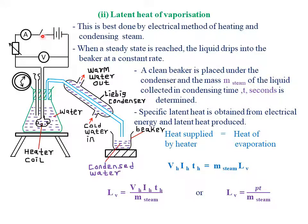In this particular experiment, the first step is simply to close the switch so that the electrical energy flows through this particular heater. Remember that the heater usually has a heating coil, which is made of a material of very high electrical resistance, such that when electrical energy flows through the heating coil, all the electrical energy will be converted to heat energy. That particular heat energy is used to heat the water until it gets to its boiling point.